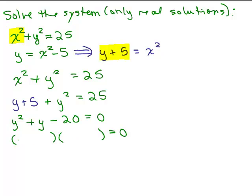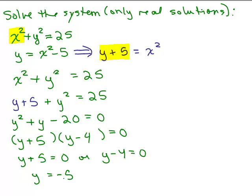Which isn't too hard to factor. We have y plus 5 and y minus 4. So y plus 5 equals 0 or y minus 4 equals 0 gives us a solution for y of either negative 5 or 4.